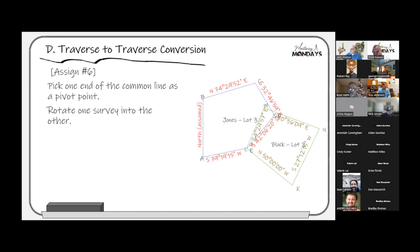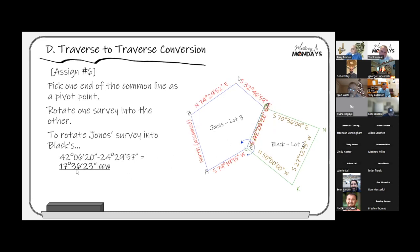This is essentially a coordinate transformation, but we're only doing the rotation — no scaling or translation. To perform the rotation, we need the direction of the common line in both systems. We have that here. The angle of rotation is the difference between the two bearings — 17°36'23". Remember: we're dealing with bearings, not azimuths, so not every bearing increases by that amount. Some will increase, others will decrease depending on which quadrant they're in. With azimuths, all values would change by the same amount.